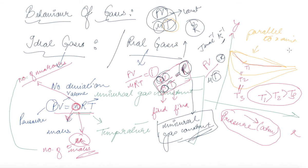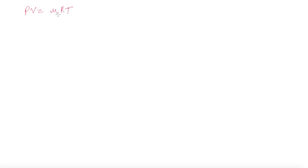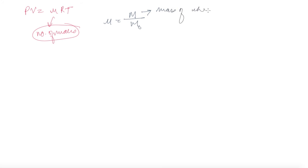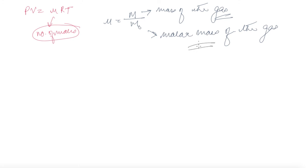Moving on, we can write PV = mu*R*T in different ways. Mu is the number of moles, and it can be written as m divided by m0, where m is the mass of the gas and m0 is the molar mass of the gas.